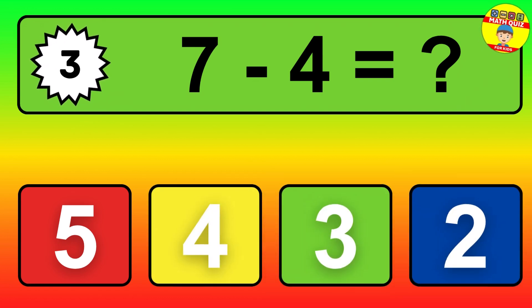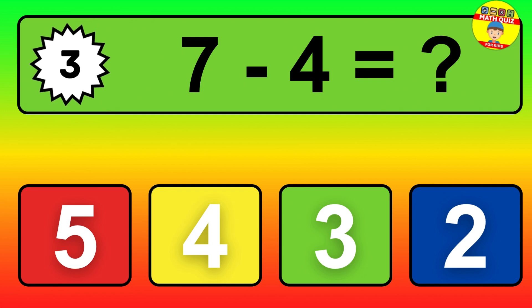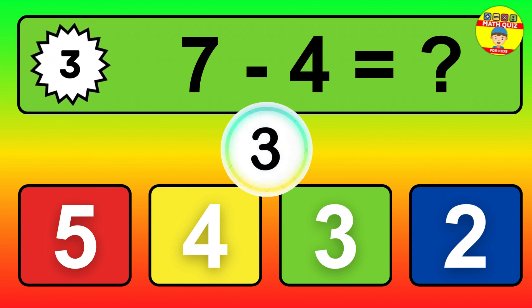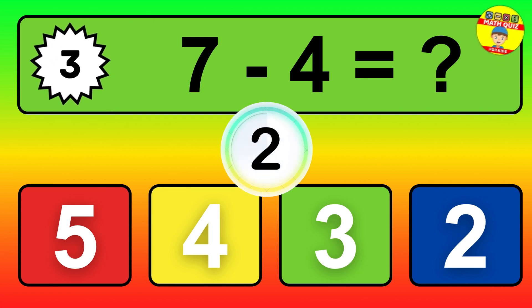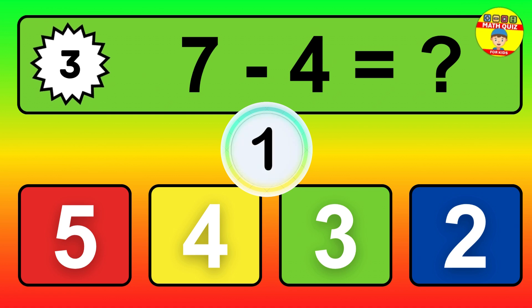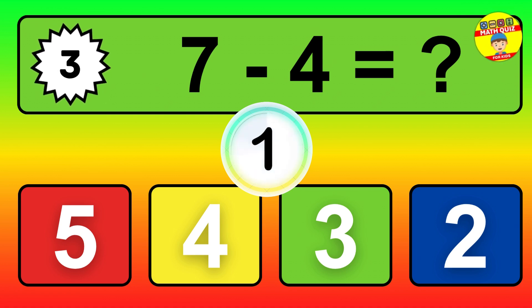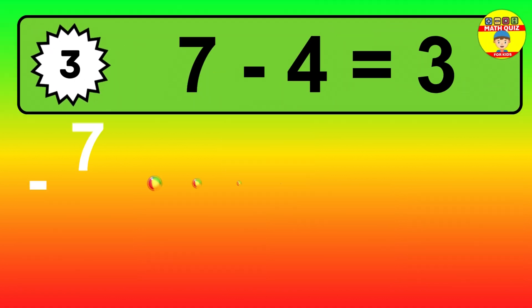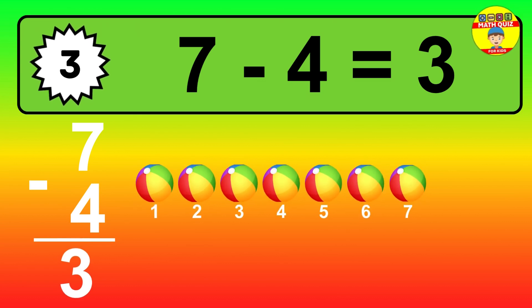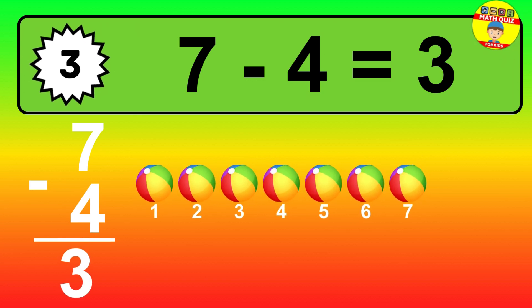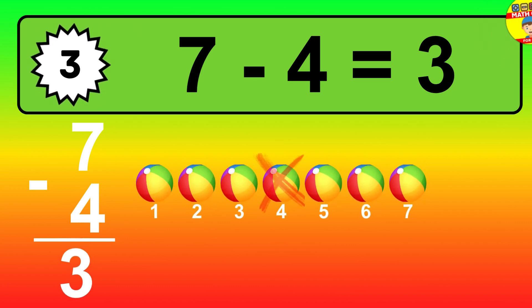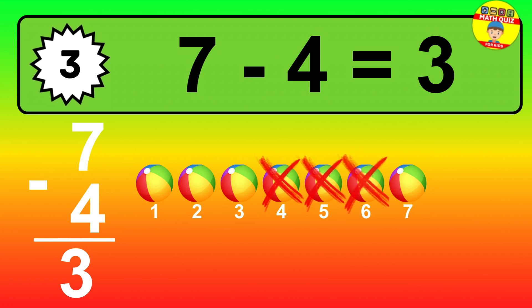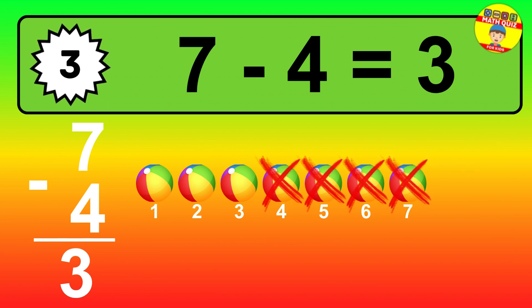Question 3. 7 minus 4 equals what? So the answer is 7 minus 4 is 3. Let's count it. 1, 2, 3.